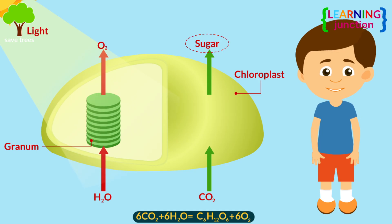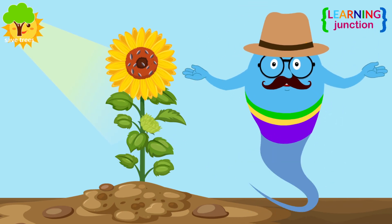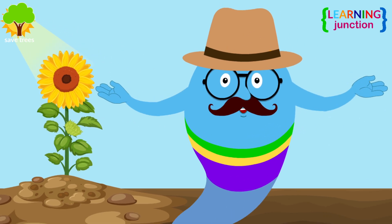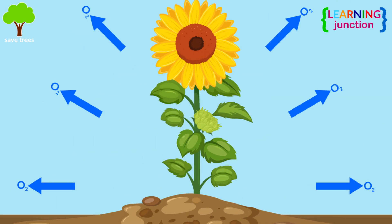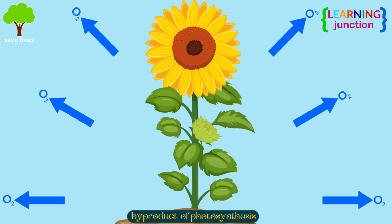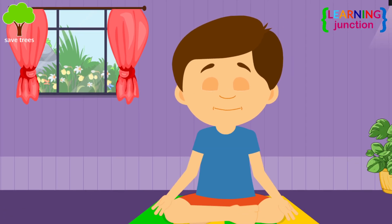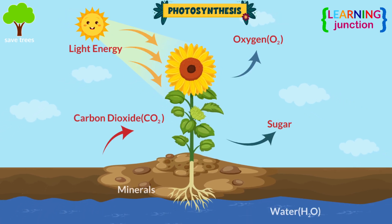This process produces glucose and oxygen. When plants need energy for things like growing new leaves or making seeds, they break down this stored starch into glucose, which then fuels the plant cells. Plants release oxygen into the air as a byproduct of photosynthesis. This oxygen is crucial for the survival of all living organisms, including humans. Here is the diagram of photosynthesis. You can use it in your assignments.